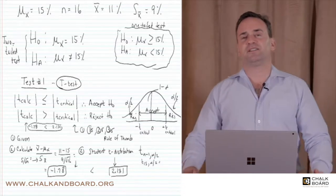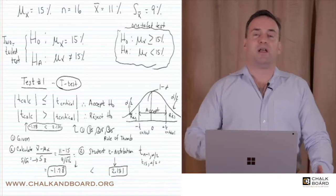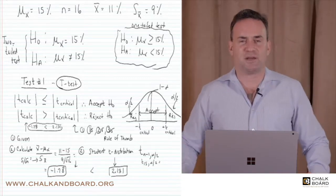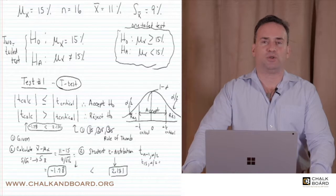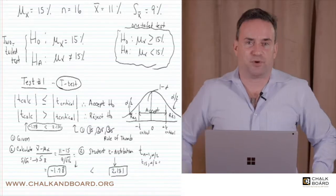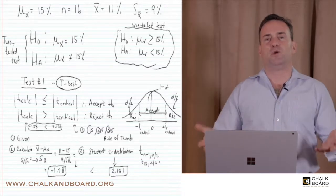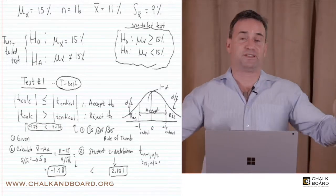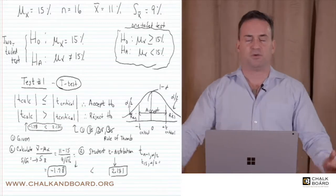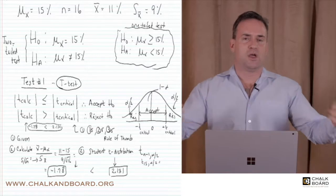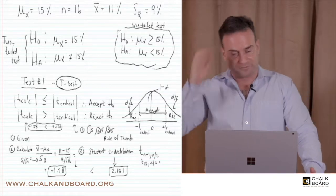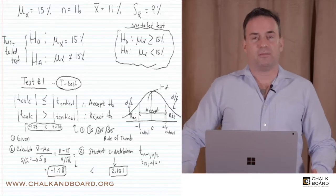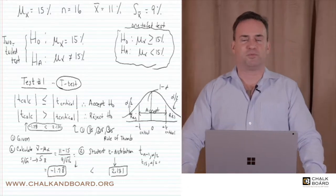This technical stock selection service company makes a claim that over the last year on all of their stock picks, they have earned an average annual total return of 15%. So we would say that mu of X — the population mean, which represents all of the company's stock picks — is 15%.